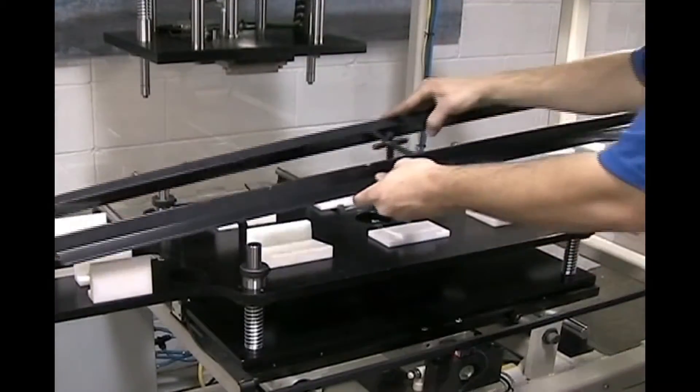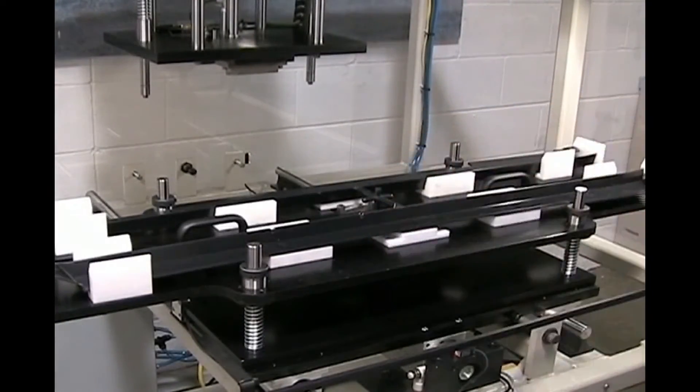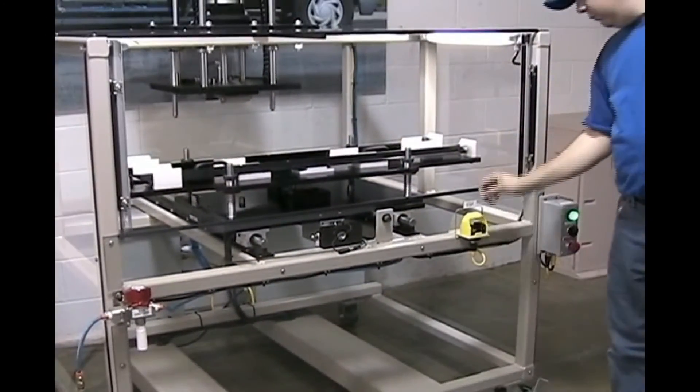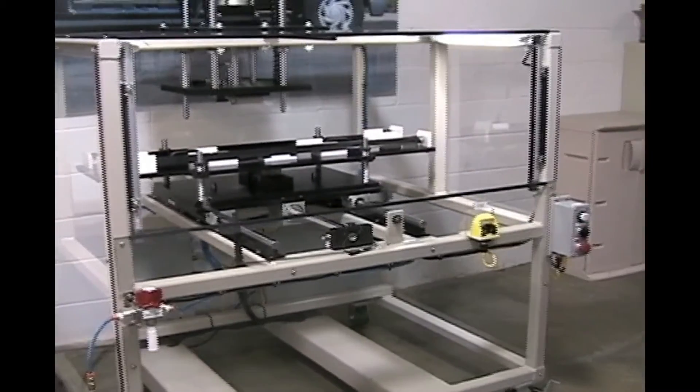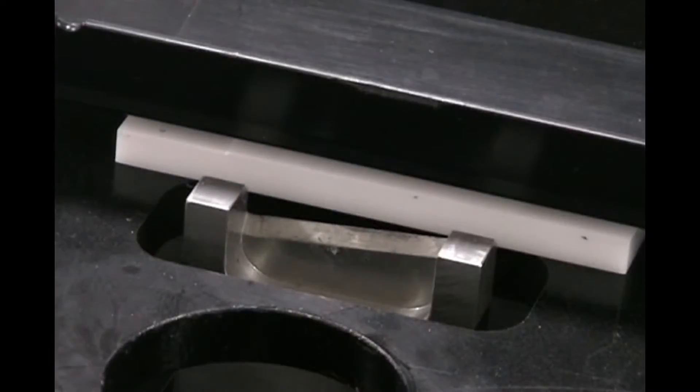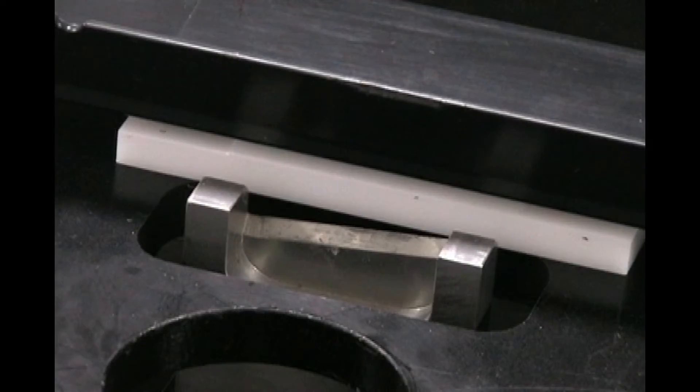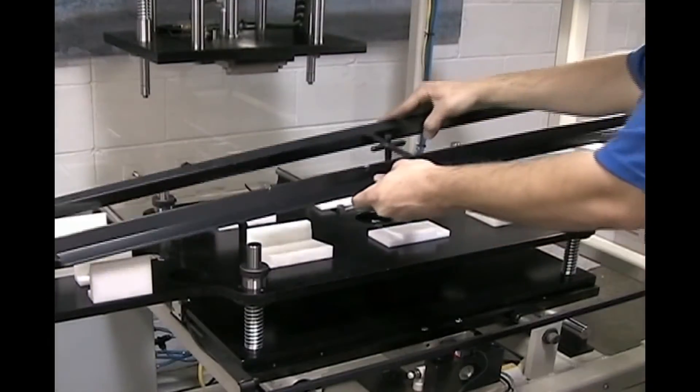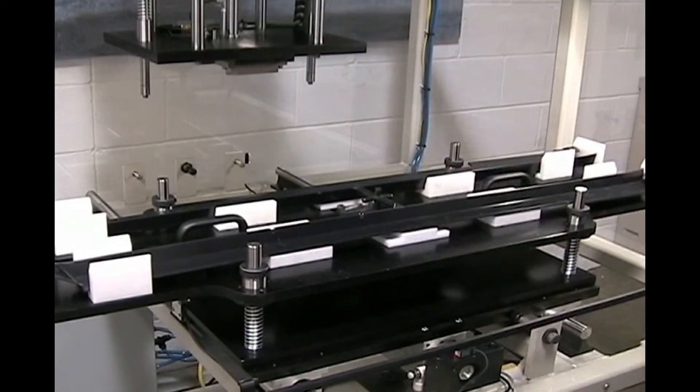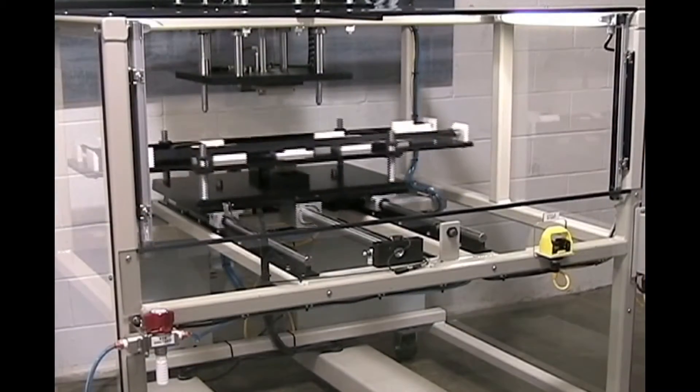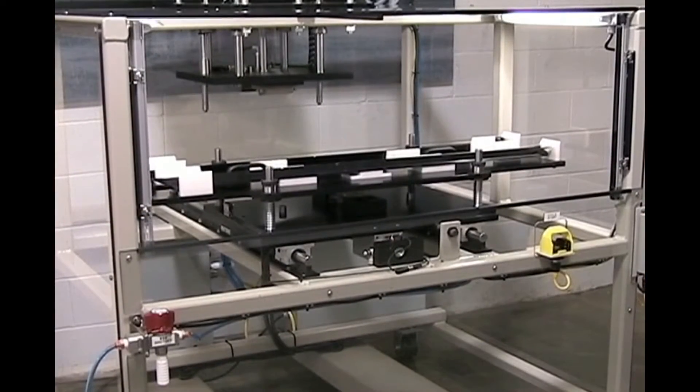Parts can be placed into the degator by an operator or by a robotic arm. With operator safety being our first priority, the custom-designed nest offers shielded blades and positive part location. The shuttle table allows for easy and accurate part placement by operator or robot, while ensuring safety by degating away from all personnel.